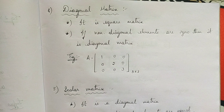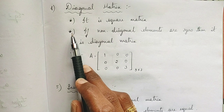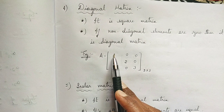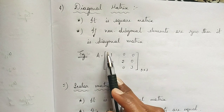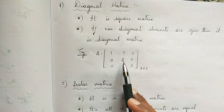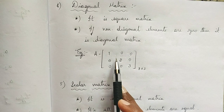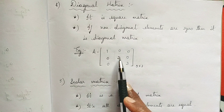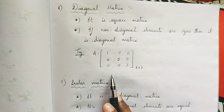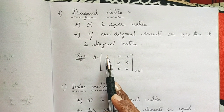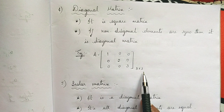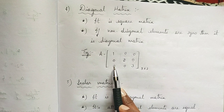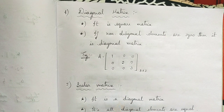Next is diagonal matrix. There are two conditions: it should be a square matrix, and the non-diagonal elements are zeros. The elements where i and j are equal — that is a(1,1), a(2,2), a(3,3) — are called diagonal elements. All other elements are called non-diagonal elements and should be zeros for a diagonal matrix.